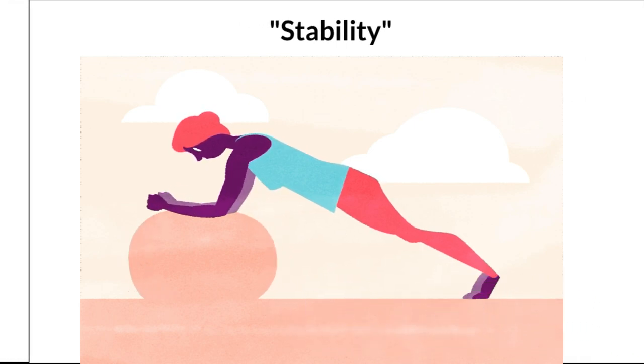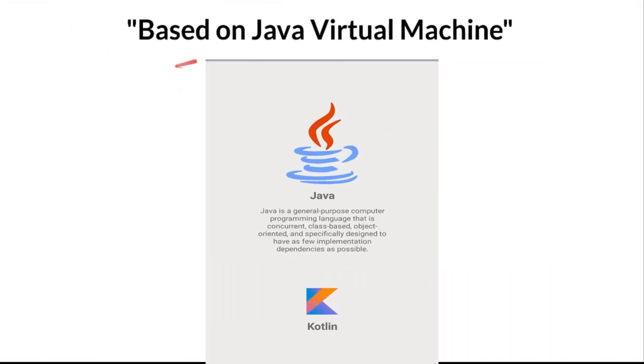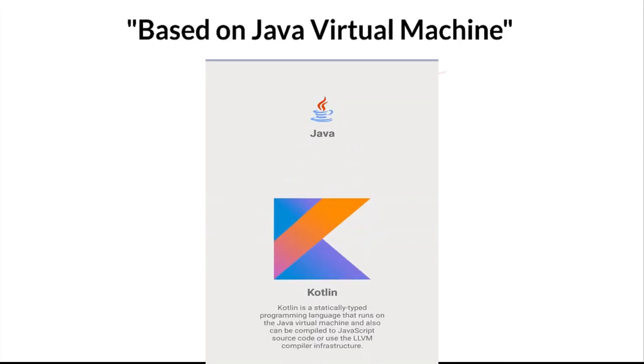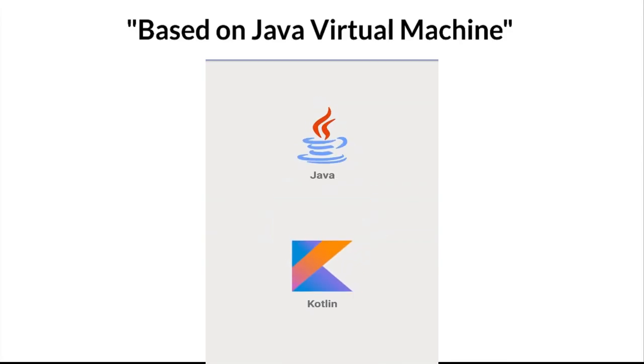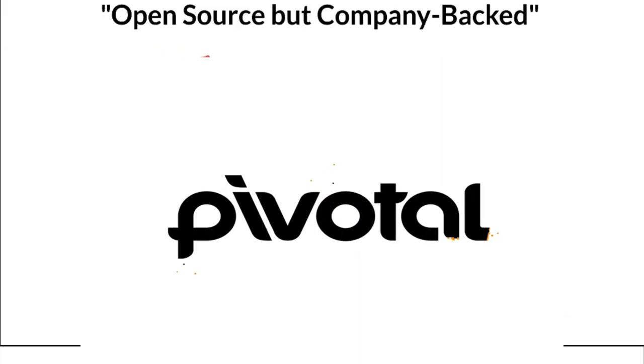The third reason is that the Spring Framework is based on the Java Virtual Machine. It depends on the JVM, which has been stable for more than 20 years, so that's why we can rely on Spring Boot.